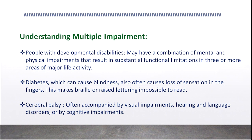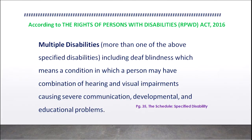Cerebral palsy is often accompanied by visual impairments, hearing and language disorders, or cognitive impairments. According to the Rights of Persons with Disabilities (RPWD) Act 2016, multiple disabilities means more than one of the specified disabilities, including deaf-blindness, which is defined as a condition in which a person may have a combination of hearing and visual impairments causing severe communication, developmental, and educational problems.